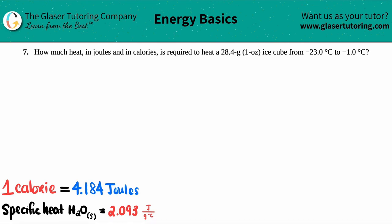Number seven: How much heat in joules and in calories is required to heat a 28.4 gram (which is the same thing as one ounce) ice cube from negative 23 degrees Celsius to negative one degree Celsius?